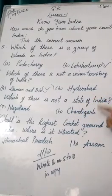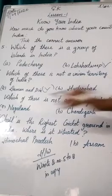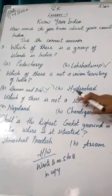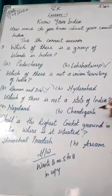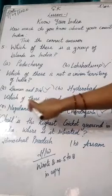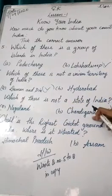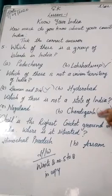Chandigarh is also a union territory. You are asked which is not a state of India — the answer is Chandigarh. Nagaland is our state, and Chandigarh is our union territory. It is also the capital of two states, so Chandigarh is not a state of India.